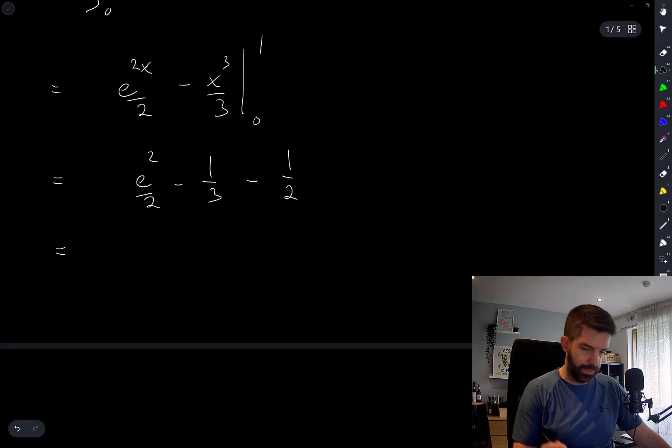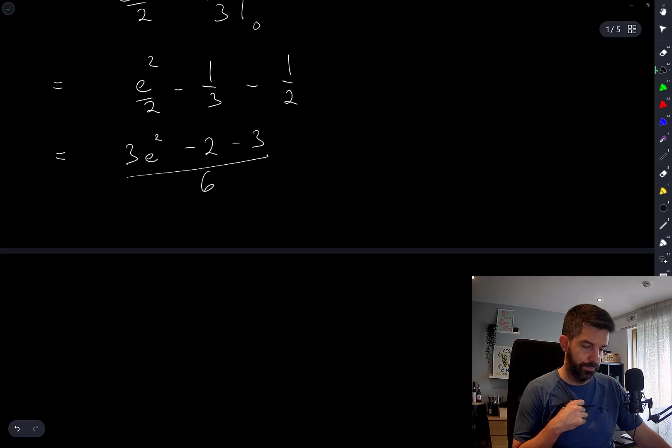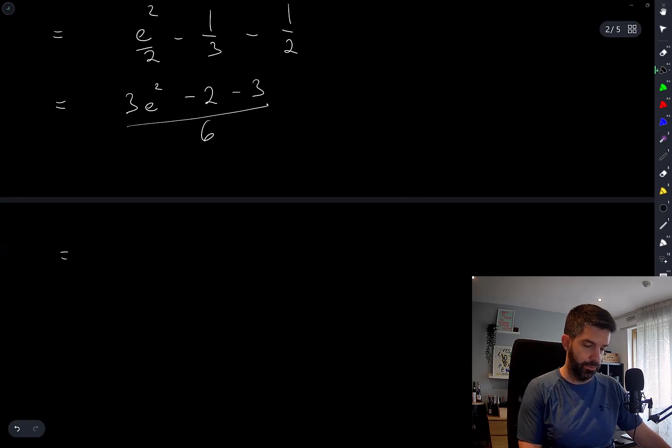To have everything over a common denominator, this is (3e^2 - 2 - 3)/6, which is (3e^2 - 5)/6.